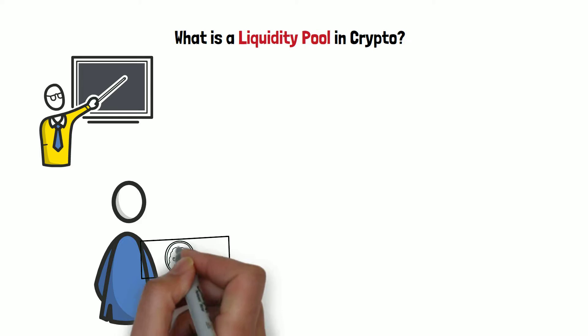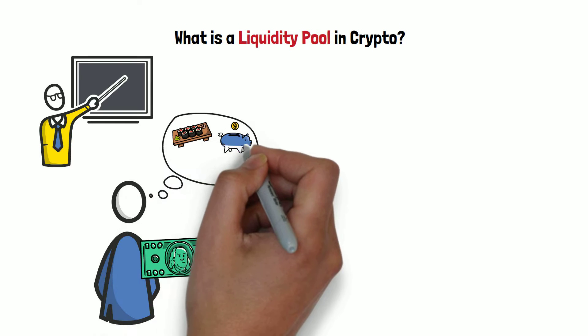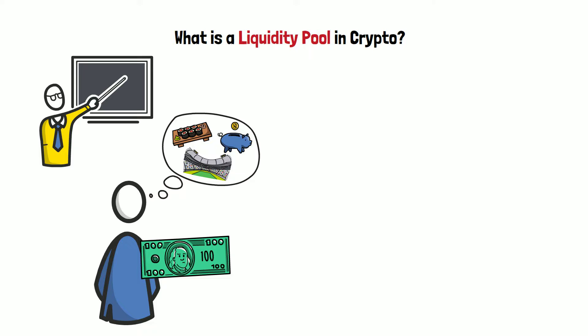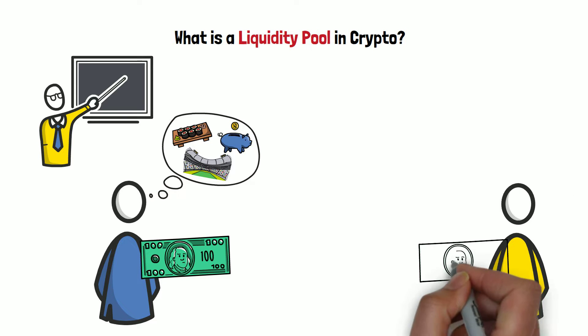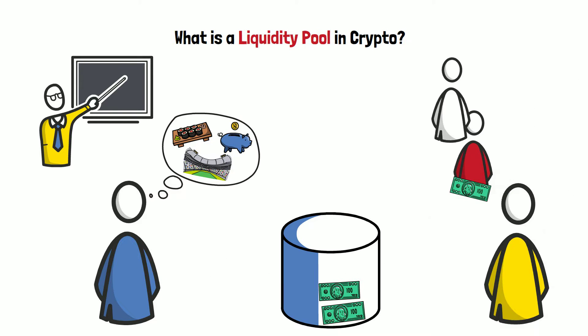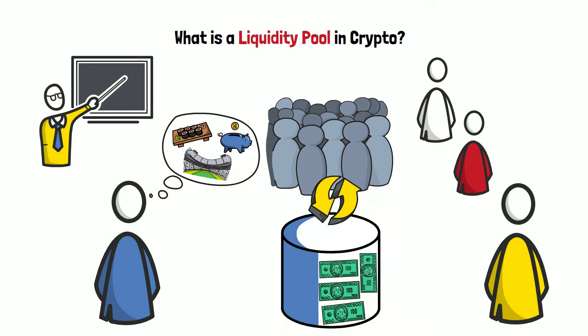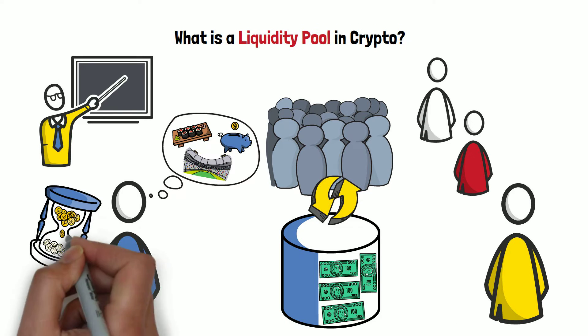Imagine that you have $100 of spare money that you don't need at this point in time. One day you're approached by your friend who offers you a deal. Both of you throw your $100 bills into a pot, invite a few other friends to do the same, and then allow other people to use the money from the pot. In turn, you will earn passive interest over time.